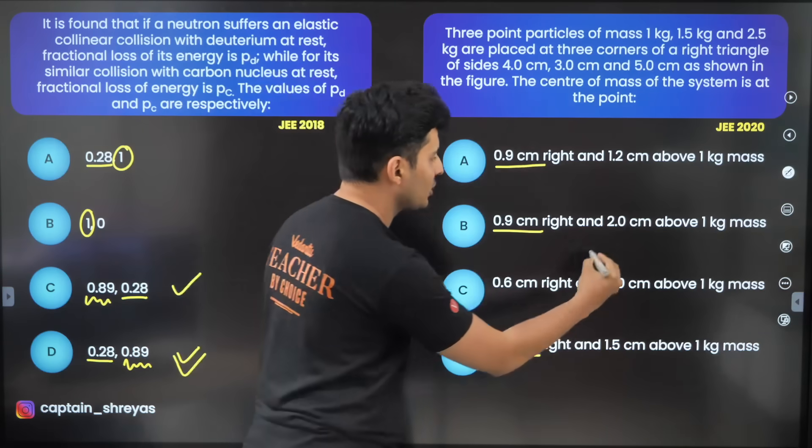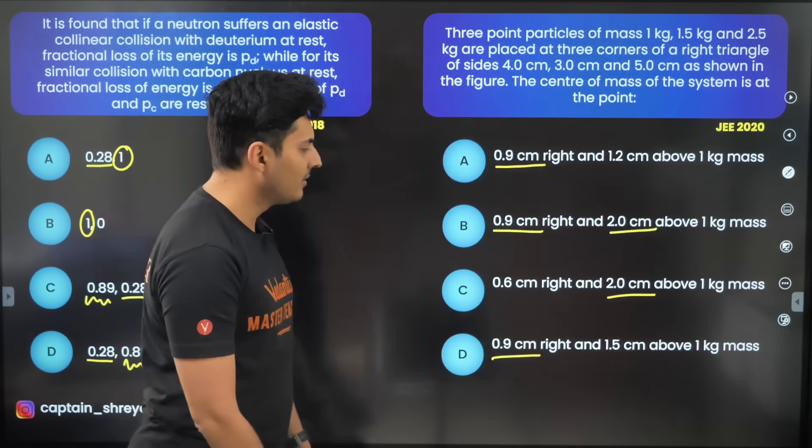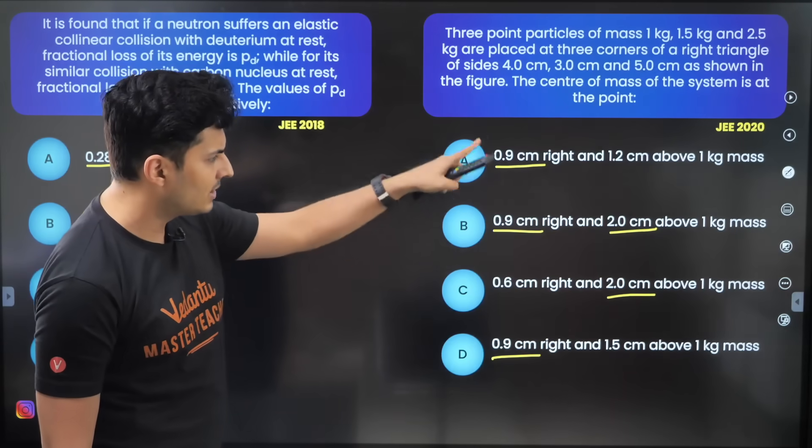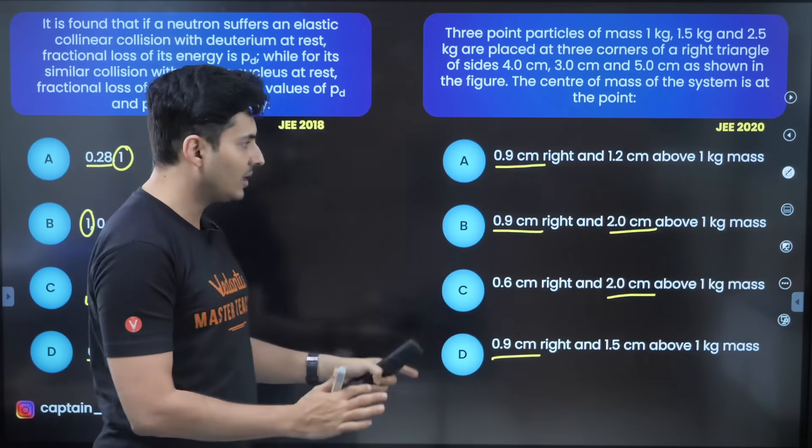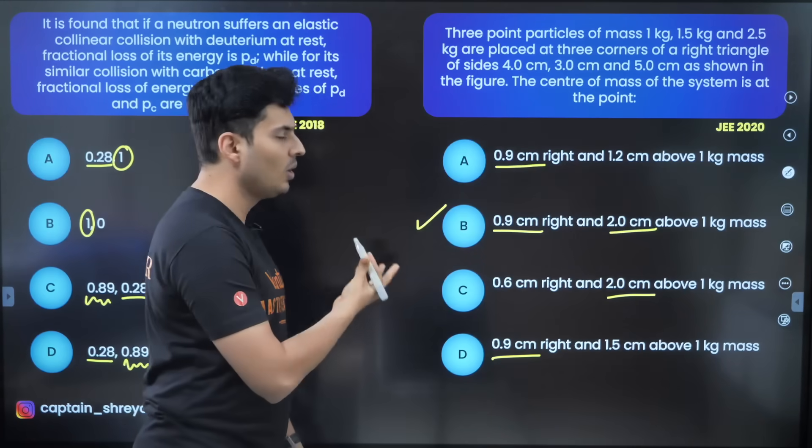2 centimeters is here as well as here. 1.5, 1.2 is different. 1 kg is there everywhere. So I can see this option B has the highest chance of being correct. So I'm just going to go with option B.